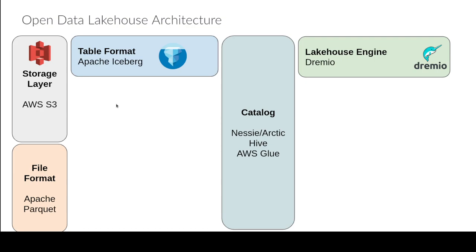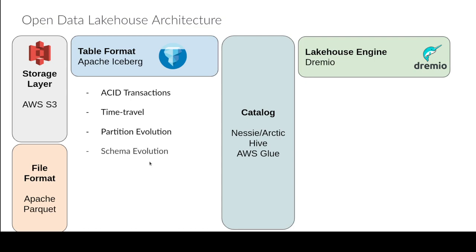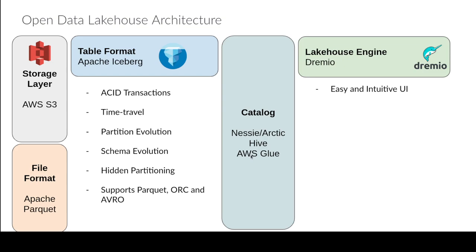Here's an example architecture for a data lakehouse. In this case, we chose Amazon S3 as our storage layer and Apache Parquet as our file format. We choose Apache Iceberg as our table format because it gives us features like ACID transactions, time travel, partition evolution, schema evolution, and hidden partitioning. It also supports various file formats like Parquet, ORC, and Avro. For the catalog, we can choose Nessie, Hive, or AWS Glue.